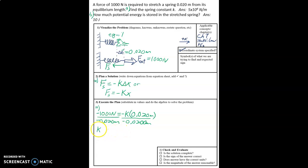And then we get a K of 5 times 10 to the fourth, or 50,000, and the units are newtons per meter. And that's the units that we should get for spring constant.